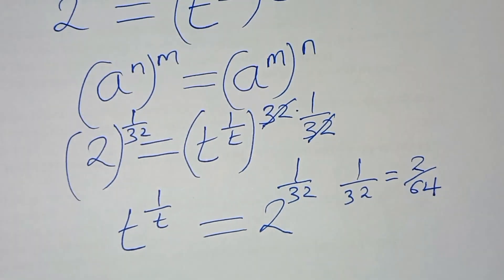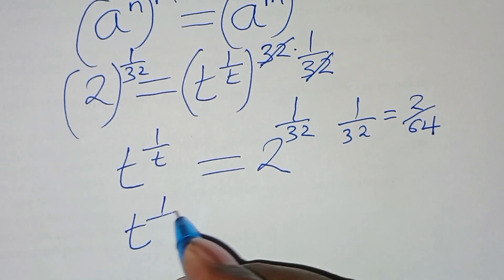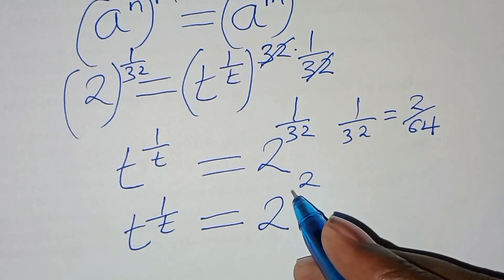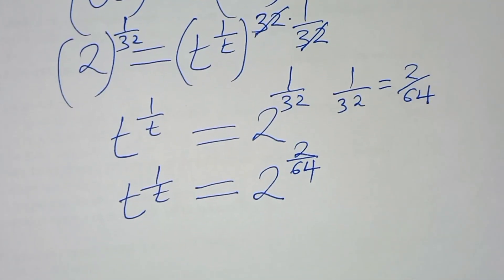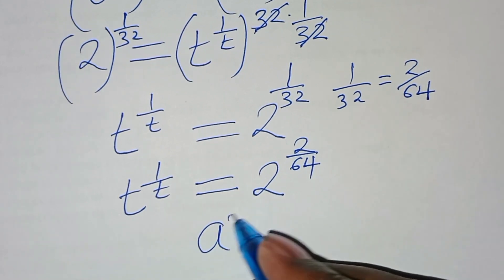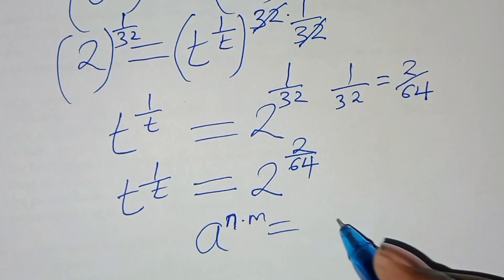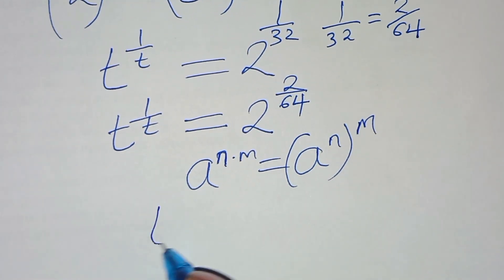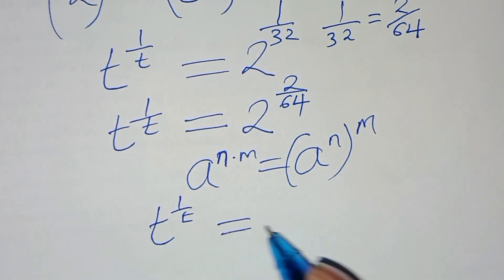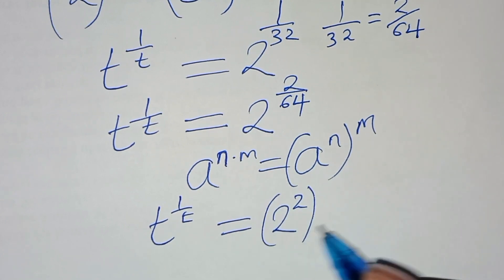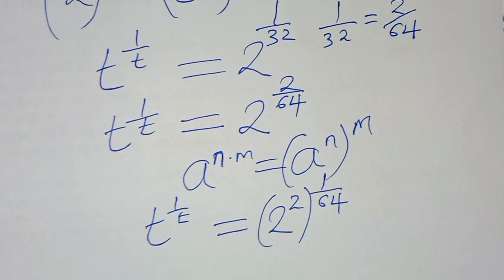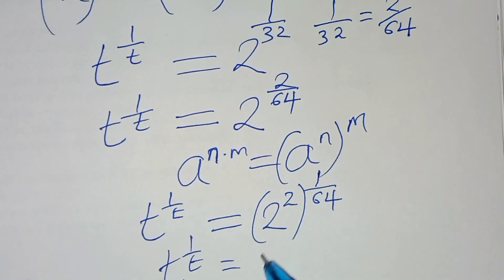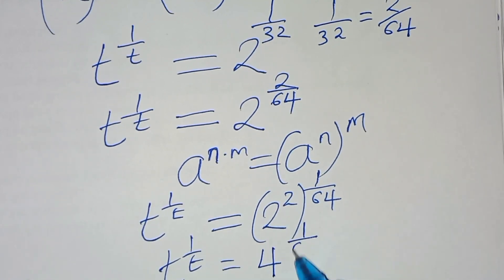2 over 64 is the same thing as 1 over 32. So here we have t raised to the power 1 over t, equal to 2 to the power 2 over 64. Given that a to the power n multiplied by m can be expressed as a to the power n raised to the power m, we'll have t to the power 1 over t equal to 2 to the power 2, multiplied by 1 over 64. So 2 squared is 4, giving us 4 to the power 1 over 64.